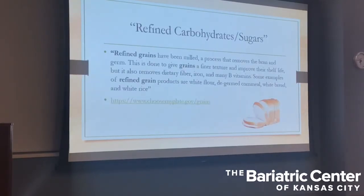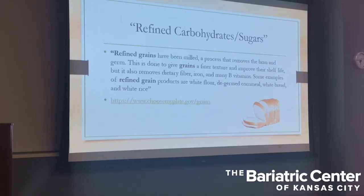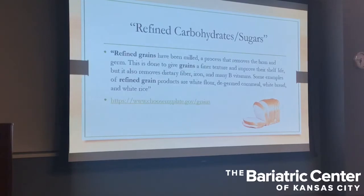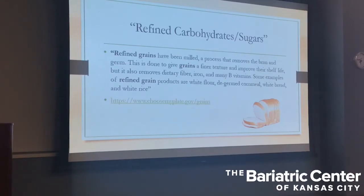You might hear the terms refined carbohydrates, refined sugars, or refined grains — they're all kind of the same. Basically, when you have flour and it's milled, it removes the bran and the germ, which also removes the fiber, iron, and B vitamins. They're stripping the plant of its nutrition and leaving what's left. The reason this is done in manufacturing is because it makes a finer texture — think cake versus bread — and it also extends shelf life. Specific examples of refined grains are white flour, de-germ cornmeal, white bread, and white rice.